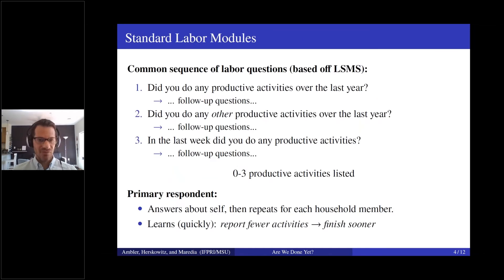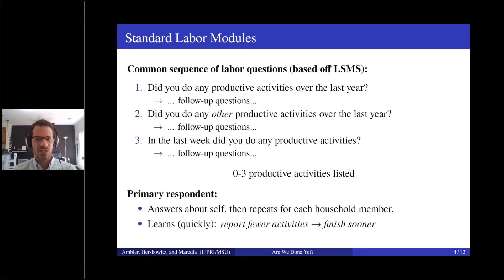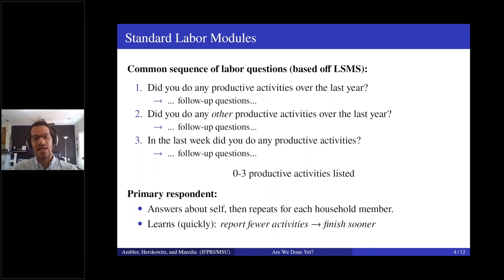We built our labor module off of the LSMS format. It's a very standard structure. It starts by asking the respondent whether they did any productive activities in the last year. If they say yes, we ask them to identify their primary activity and ask a number of follow-up questions. We then ask if they did any other activities, and if so to define those with more follow-up questions. Then we ask about the last week. This leads to between zero and three unique productive activities identified for the respondent. They answer about themselves and then typically follow through the household roster order to answer these questions about the other members. Very quickly, the respondent learns that if they just say that someone did fewer activities, they can finish sooner.